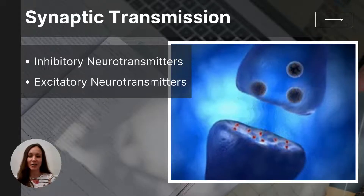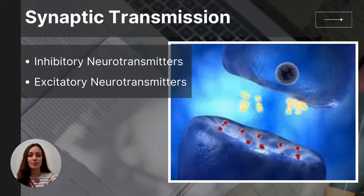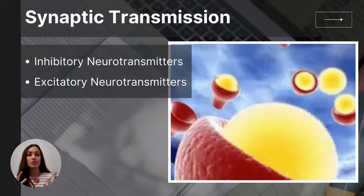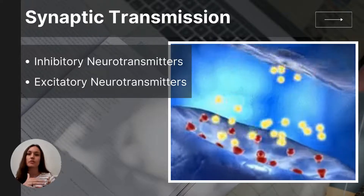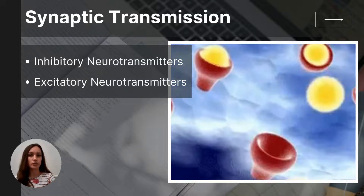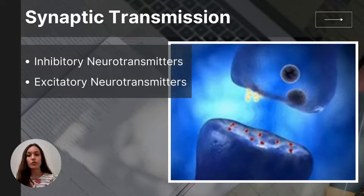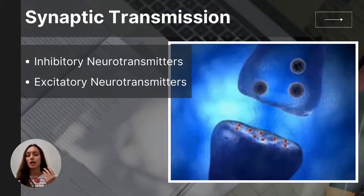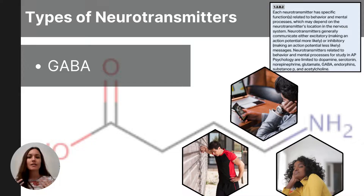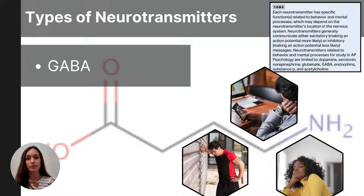In AP psychology, you only need to know eight neurotransmitters. Some neurotransmitters are inhibitory, meaning they decrease the likelihood that a neuron will fire an action potential, effectively calming and slowing neural activity. Excitatory neurotransmitters increase the likelihood of firing an action potential and promote the speeding up of neural activity. You'll need to describe each neurotransmitter's function as well as what happens if there is an excess or deficiency of that particular neurotransmitter.